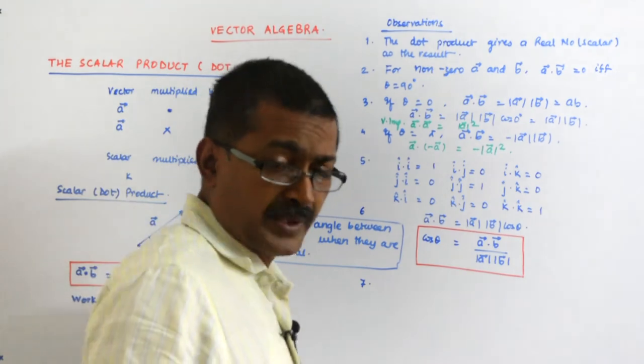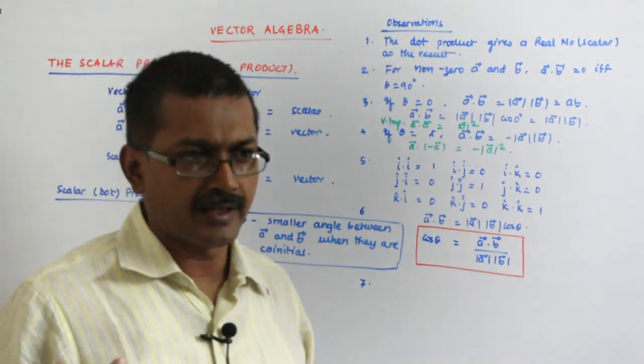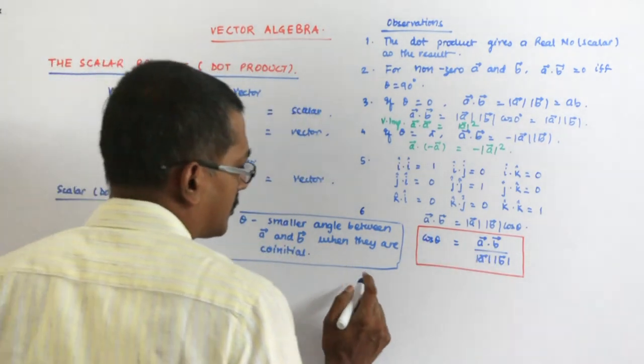Provided you should be knowing what A dot B is. We have still not told you how to find out A dot B, right. Given two vectors A and B in the component form, you still do not know, but you will soon know, don't worry.